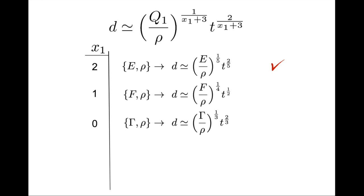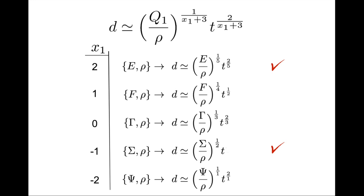Moving on to x1 equal to minus 1, the time exponent is 2/2, so d is simply proportional to time. This stress-density regime corresponds to the propagation of sound, which we discussed in the last episode on simple speeds. Our last example is x1 equal to minus 2: force density psi and mass density rho. The exponents simplify and we get a size d proportional to the square of time, just as in the free fall.